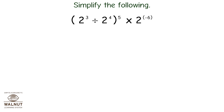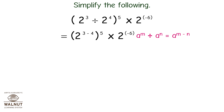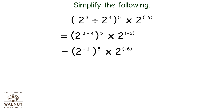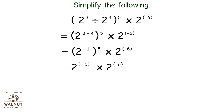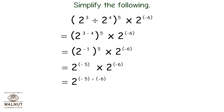Simplify the following: 2 cubed divided by 2 raised to 4, whole raised to 5, into 2 raised to minus 6. Using a raised to m divided by a raised to n equals a raised to m minus n, we get 2 raised to 3 minus 4 whole raised to 5 into 2 raised to minus 6. Applying a raised to m whole raised to n equals a raised to m into n, we get 2 raised to minus 5 into 2 raised to minus 6. Since bases are the same, we add exponents: 2 raised to minus 5 plus minus 6 equals 2 raised to minus 11, which equals 1 upon 2 raised to 11.